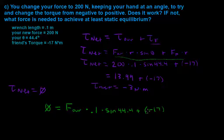And now that this is set equal to zero, we can just add 17 on both sides, make things a bit easier. So 17 is going to be equal to the force that we're trying to find times 0.1 times the sine of 44.4.